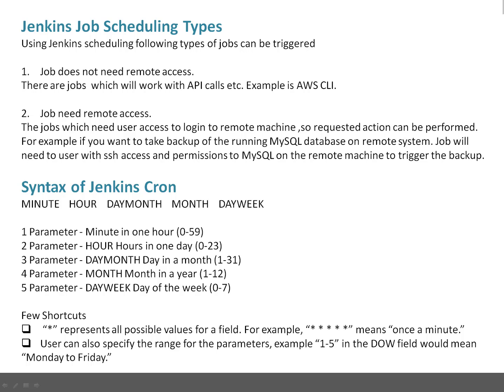The syntax of Jenkins cron — or Jenkins scheduling — uses five parameters: minute (0–59), hour (0–23), day of month (1–31), month (1–12), and day of week (0–7). For shortcuts, if you put five stars, the job will run after every minute. You can also specify a range — for example, 1-5 in day of week means Monday to Friday. The only difference from Unix cron is that in Jenkins cron, you only specify the schedule; the job to execute is specified in the job section itself.